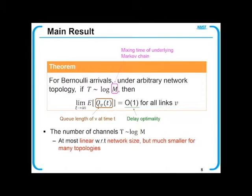This is the main theorem of our analysis. For any network topology and arbitrary network size, if the number of virtual channels T is logarithmic in M, then the asymptotic expected queue lengths for all links are constants. Regarding M, the scheduling dynamics of the CSMA algorithm form a Markov chain. M is the mixing time of the underlying Markov chain. According to the references, the mixing time is at most exponential in network size, so the required T is at most linear with respect to network size, but much smaller for many topologies.